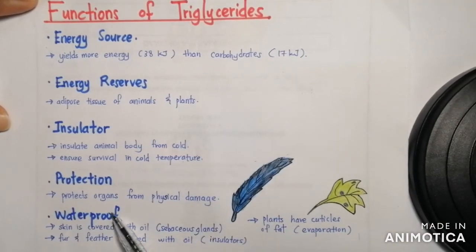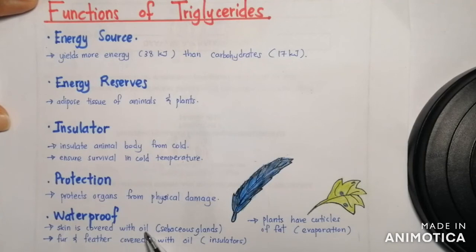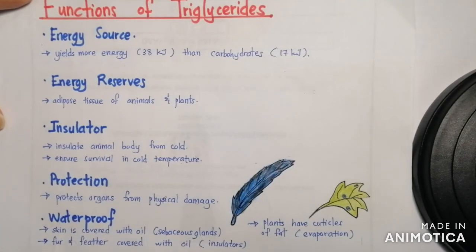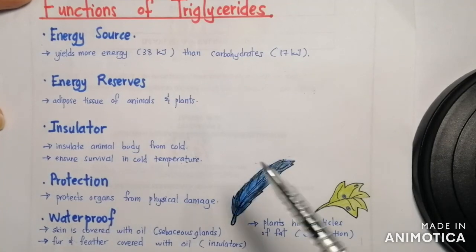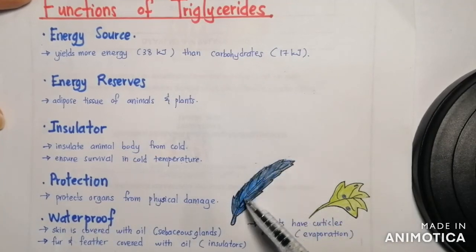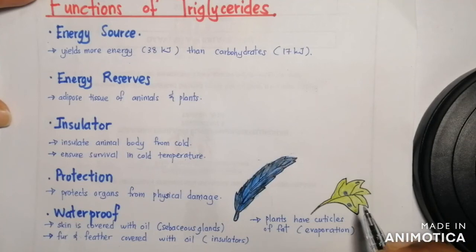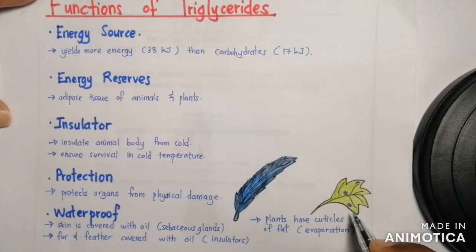Triglycerides also act as a waterproof layer. Our skin is covered with oil secreted from the sebaceous glands, found on our skin, face, and hair. It is also found in the fur and feathers of animals, acting as insulation. The cuticles of leaves also contain triglycerides to prevent excessive evaporation.